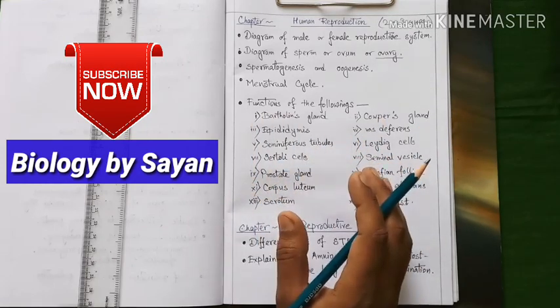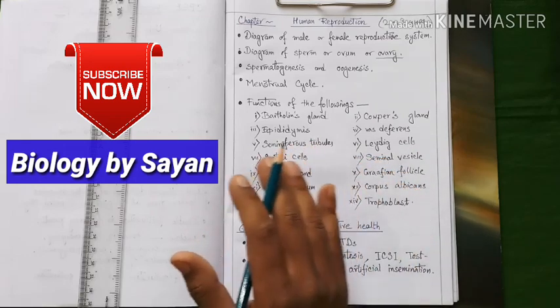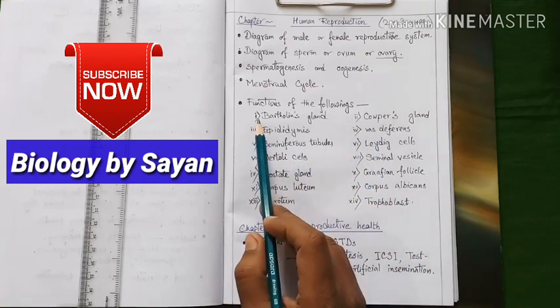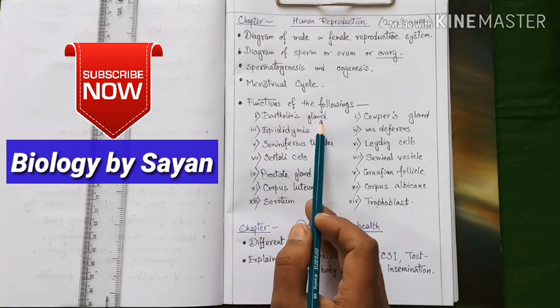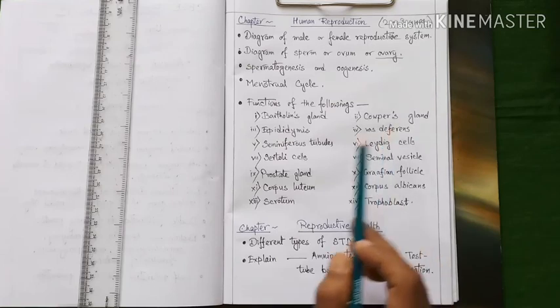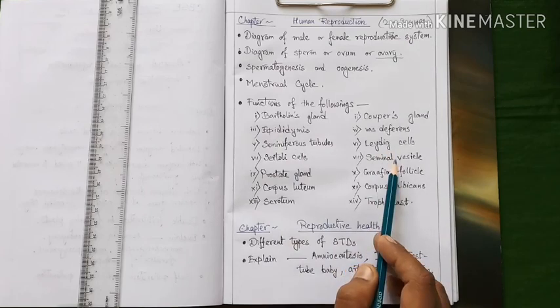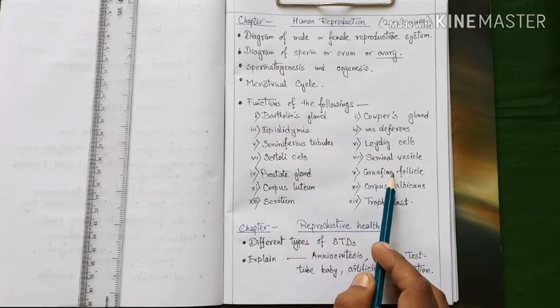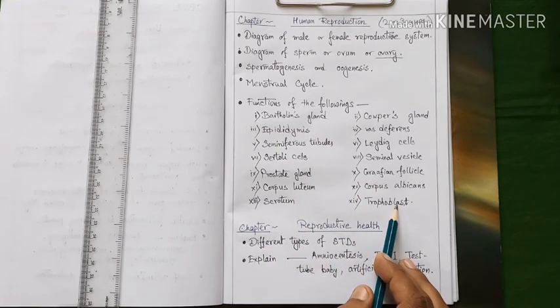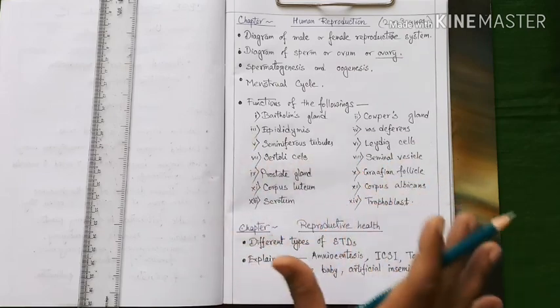Next you need to prepare some notes on the following topics specially putting emphasis on their location in our body as well as the function of these structures. For that purpose you need to prepare the notes of these topics like Bartholin glands, corpus glands, epididymis, vas deferens, seminiferous tubules, Leydig cells, Sertoli cells, seminal vesicles, prostate glands, Graafian follicle, corpus luteum, corpus albicans, scrotum and trophoblast. You may expect any one or two question from this section.